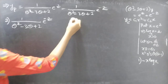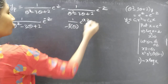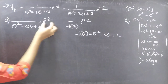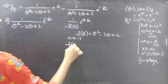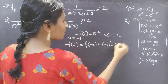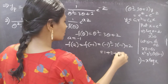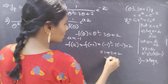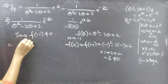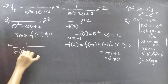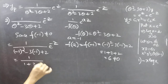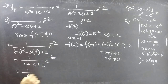Now the second term: 1 by f(theta) into e to the power minus z. This is again of the form 1 by f(theta) into e to the power az, with a equals minus 1. We find f(minus 1): (minus 1) squared minus 3 times (minus 1) plus 2 equals 1 plus 3 plus 2 equals 6, which is non-zero. So we replace theta by minus 1 in the denominator to get 1 by 6 times e to the power minus z.